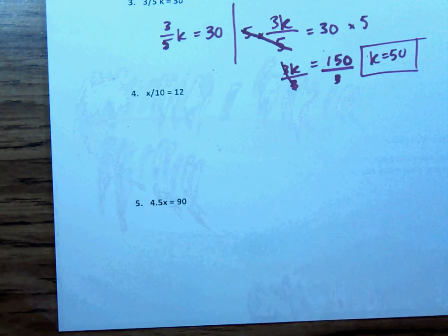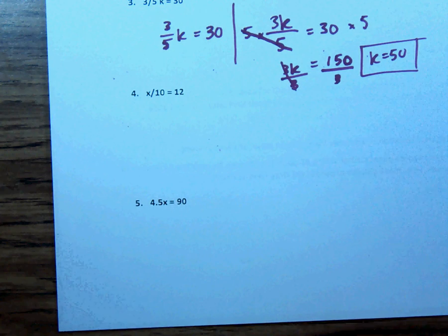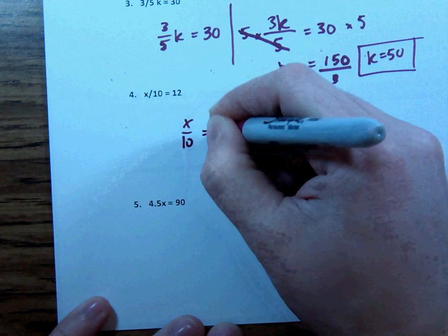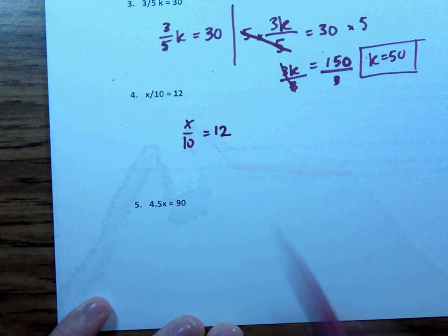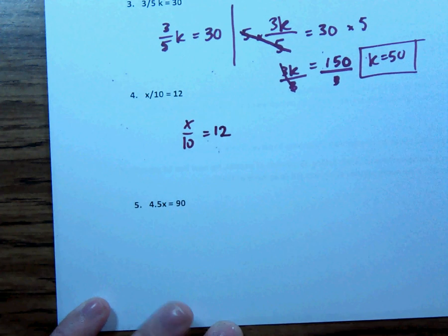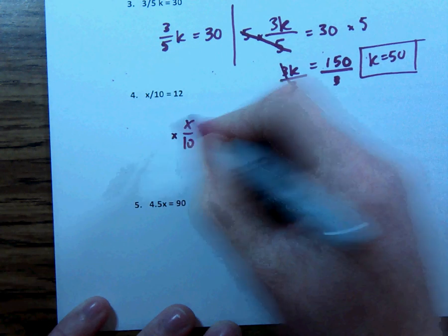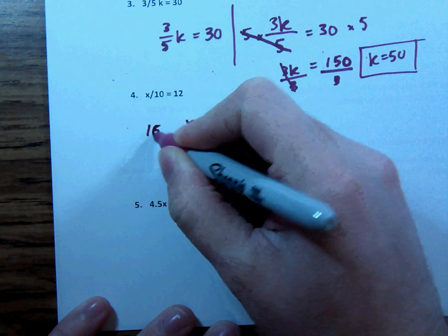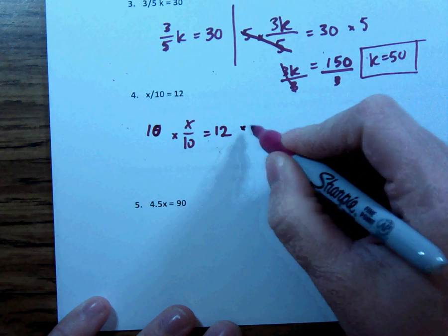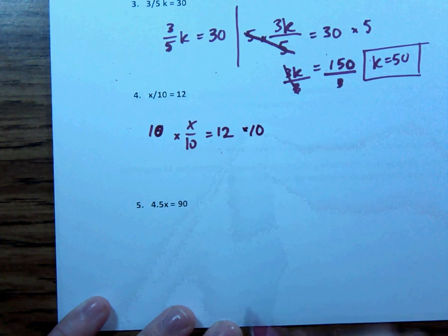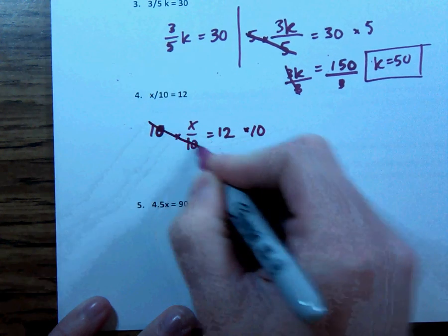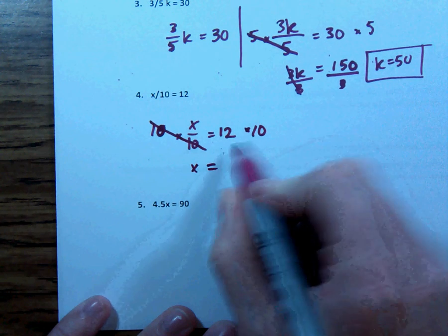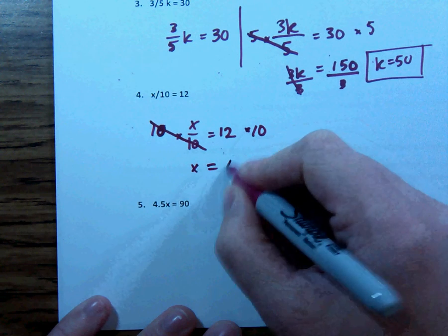Two more. X over 10 equals 12 — it's x divided by 10. The opposite of dividing by 10 is to multiply by 10. The 10s cancel out, and I get x equals 12 times 10, which is 120.